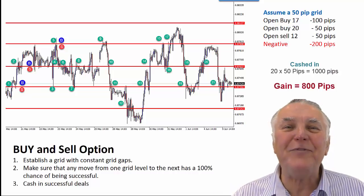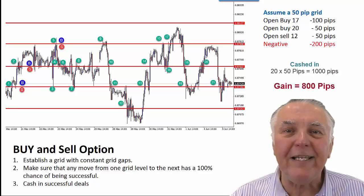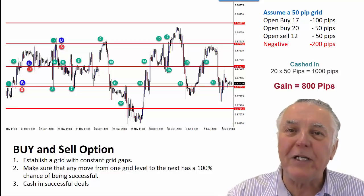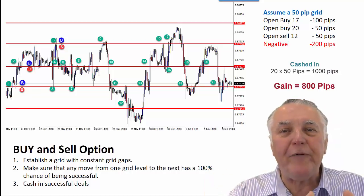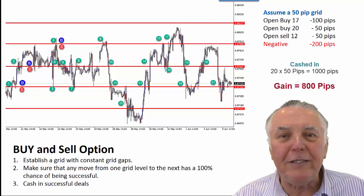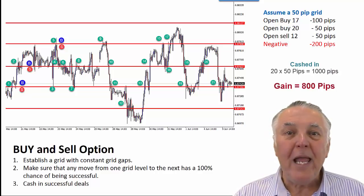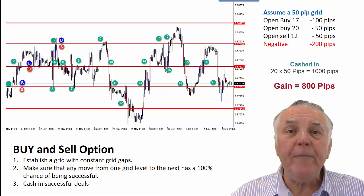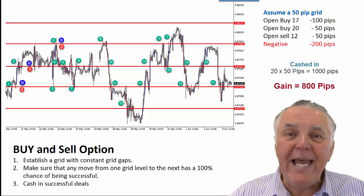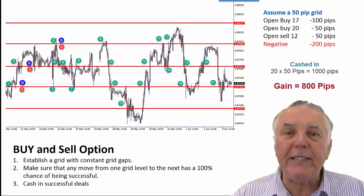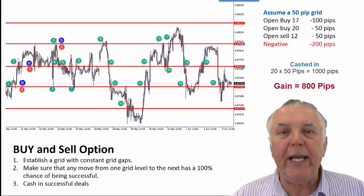How do you accomplish that? That's very easy. You put a buy and a sell in to start with. So if the price goes up to the next grid line, you cash in your buy. If it goes down to the bottom grid line, you cash in your sell. And you make sure that whenever the price reaches a grid line, that rule applies — if there's a missing buy, you add the buy; if there's a missing sell, you add the sell.